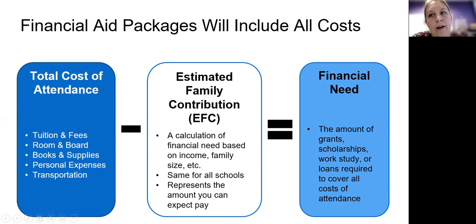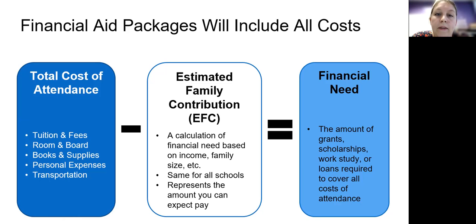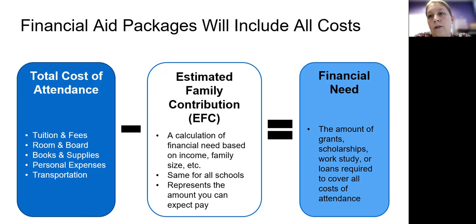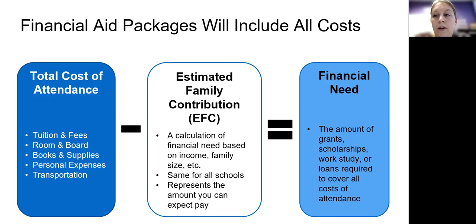Your financial aid package will include all costs — the total cost of attendance minus what they determine is the estimated family contribution. This is a calculation of financial need based on the family's income, the size of their family, and they also take into account if you have more than one child in college at the same time. This number is determined by the federal government and is the same for all schools that you apply to — it's supposed to represent the amount that you can expect to pay.